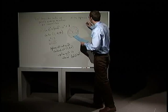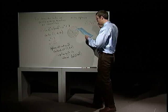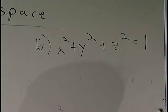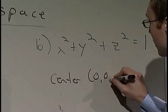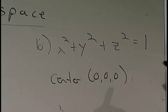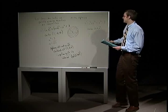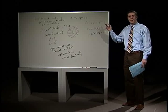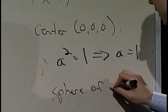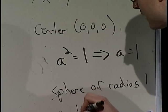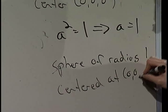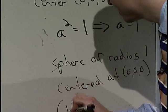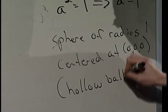Let's look at another one: x squared plus y squared plus z squared equals 1. The center here is very easy — (0, 0, 0), since nothing is being subtracted from any of the x, y, and z terms. A squared equals 1, which implies A equals 1. But notice this is equality, not inequality. So this is a sphere of radius 1 centered at (0, 0, 0), and this does not have its interior — this is just the exterior of the sphere, a hollow ball. That concludes the lecture on three-dimensional coordinate systems.